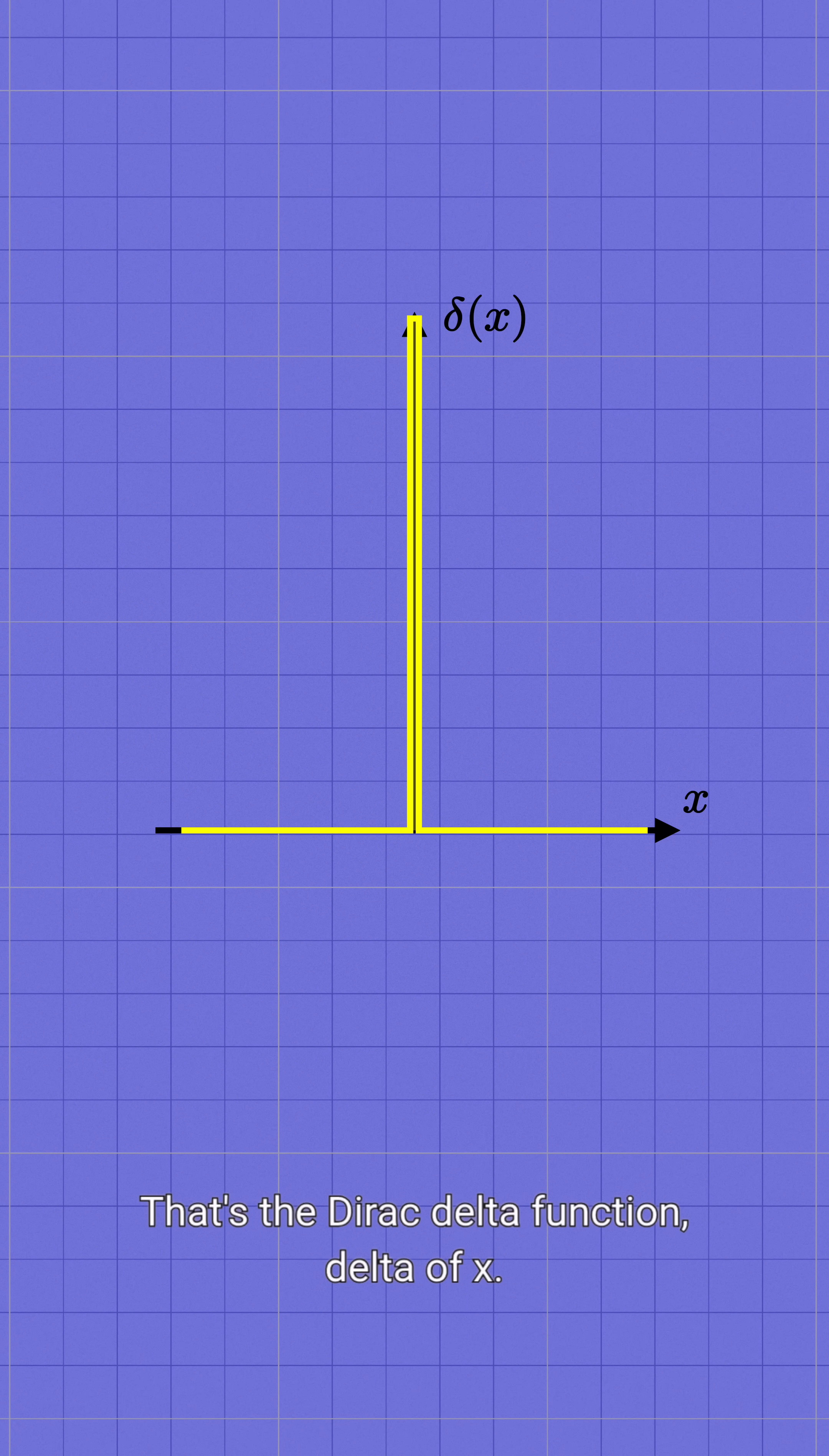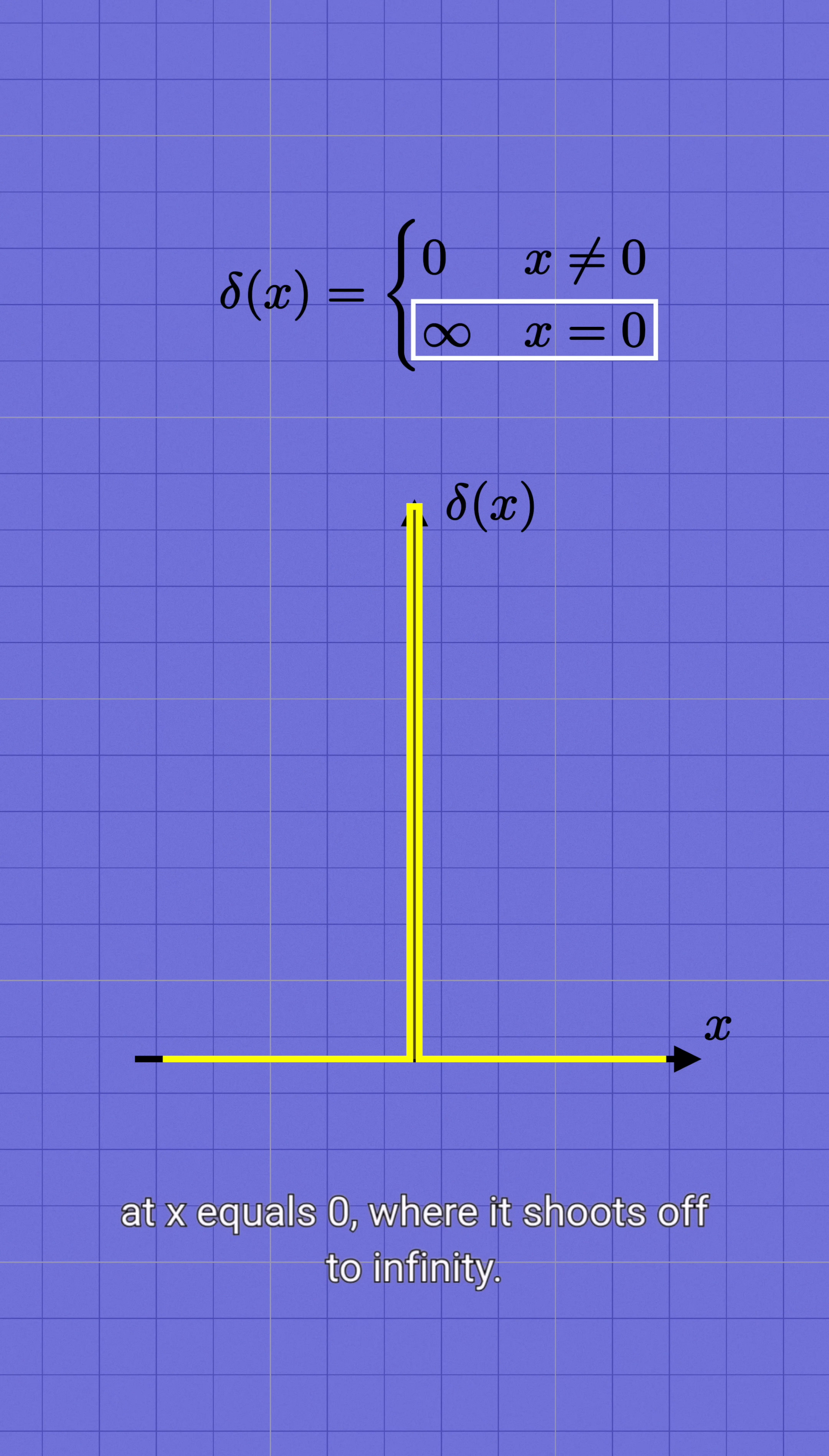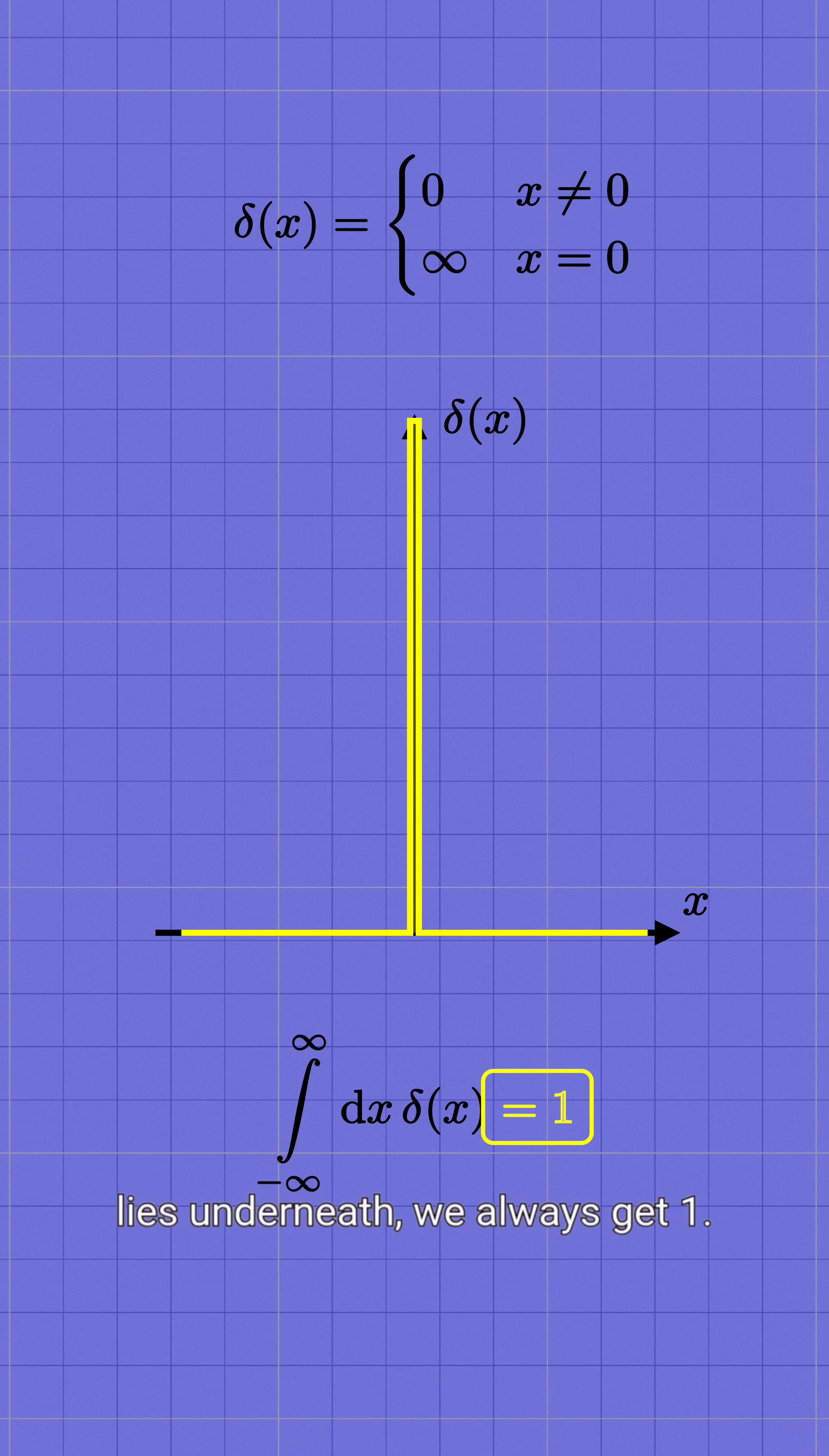That's the Dirac delta function, delta of x. It's equal to 0 everywhere except at x equals 0, where it shoots off to infinity. But when we integrate it to find out how much area lies underneath, we always get 1.